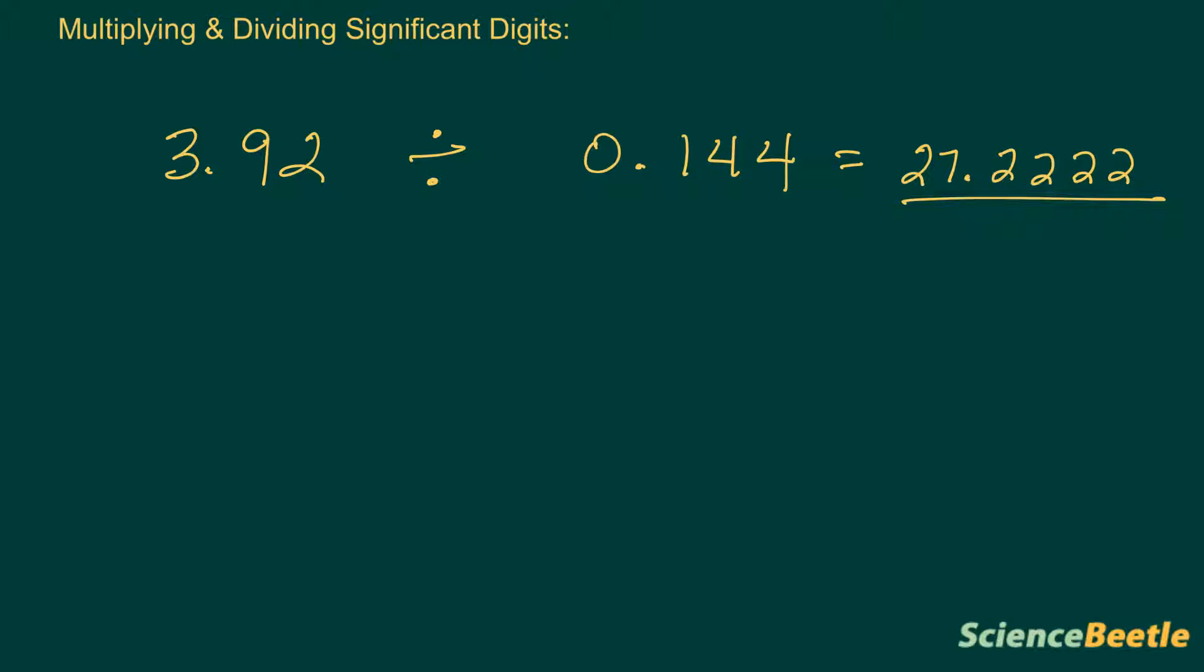If you do the math, what you wind up getting is 27.222222. In fact, there's a series of twos here. I see a total of seven twos, so I'm just going to write five or six because that's all that fits. Now, if you report this on a quiz or test, technically you're right, this is the right answer, but the problem is you're not reporting the answer to the correct number of significant figures.